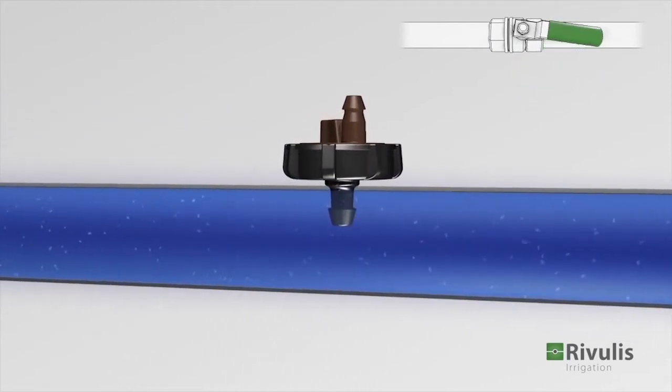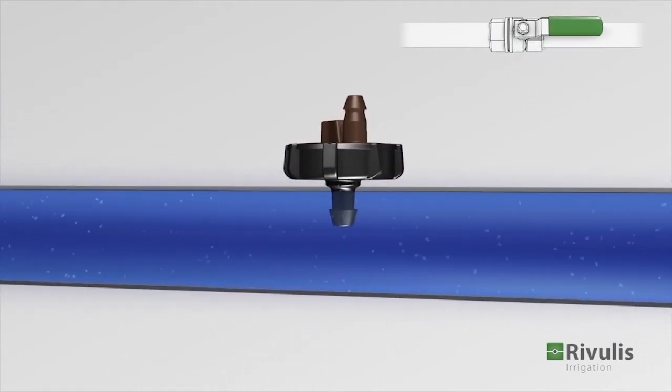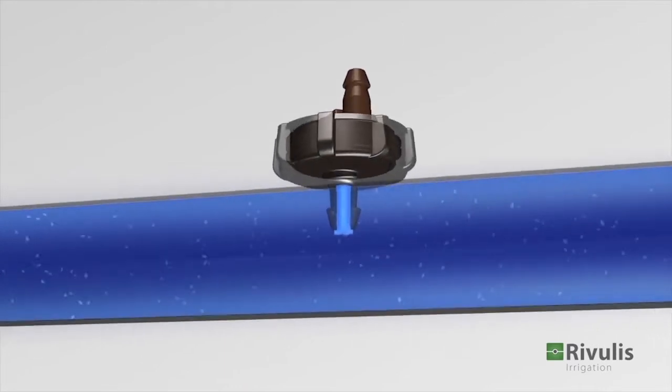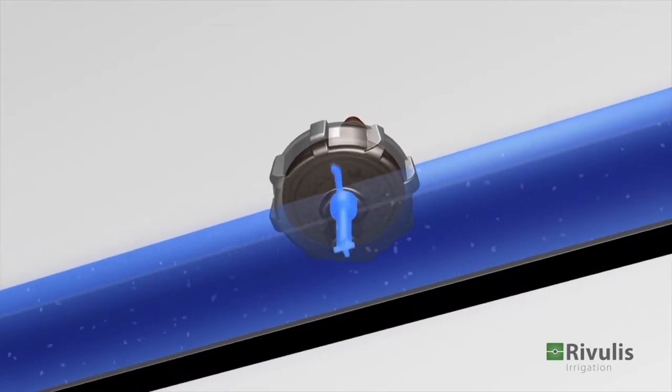The filter is located far from the tube wall, allowing the water to continuously flush it. From the filter, the water flows into the peripheral labyrinth and drips through the outlet to the plant.